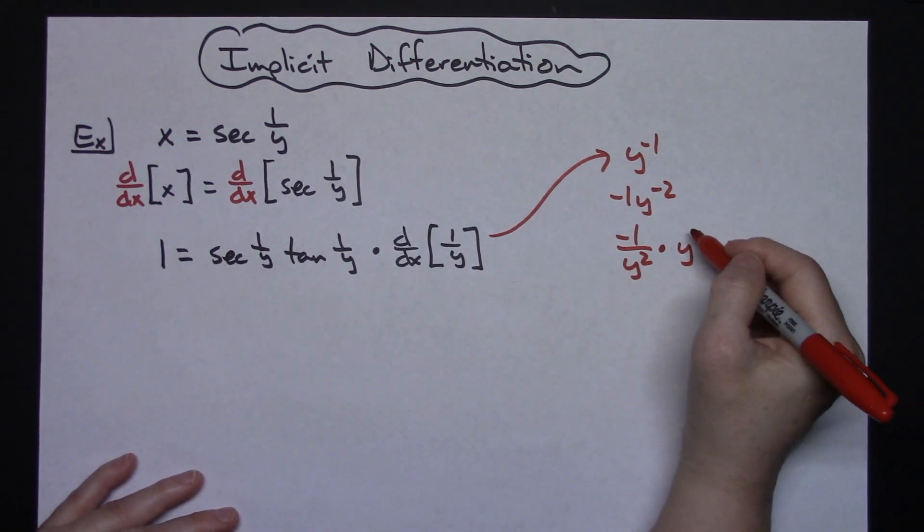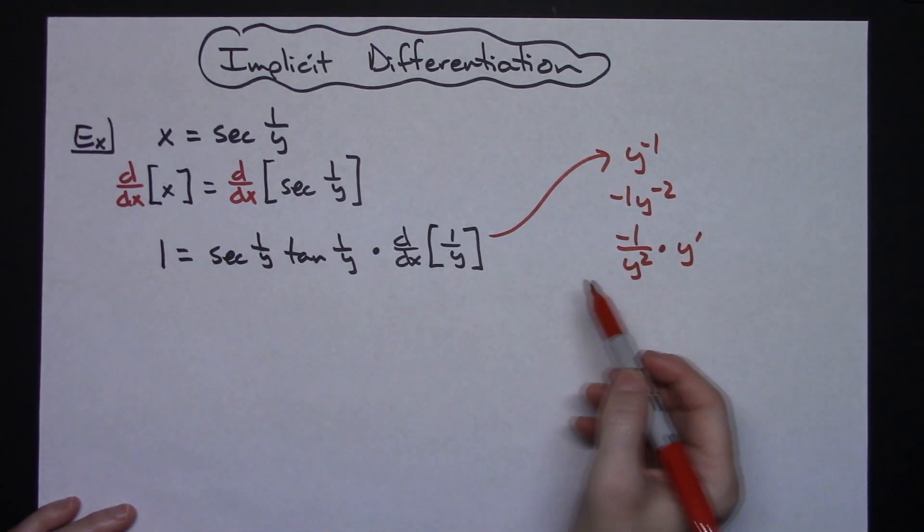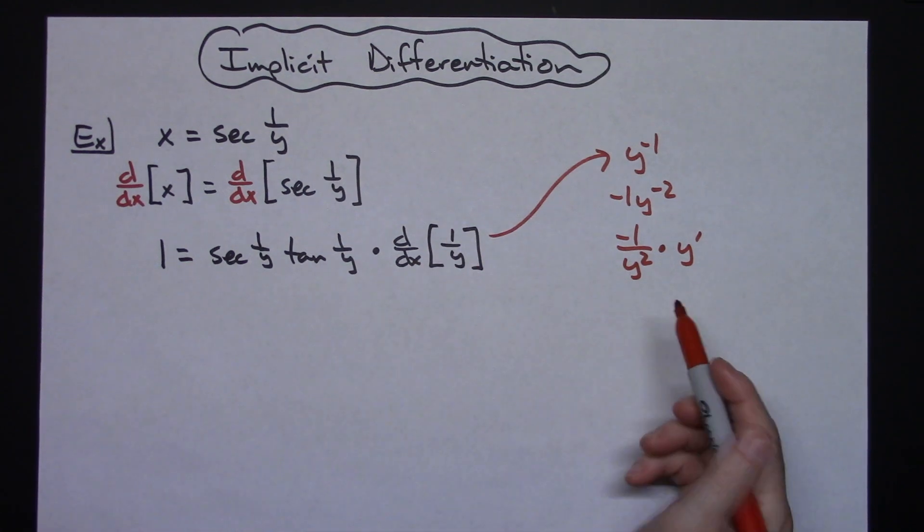A lot of people will use dy/dx notation in implicit differentiation. I kind of like y prime just because it's a little bit cleaner. So I think that's faster if you wanted you could have done quotient rule you should still end up with this type of answer here.